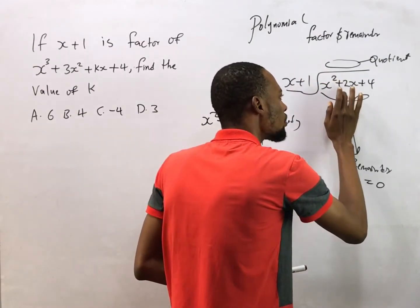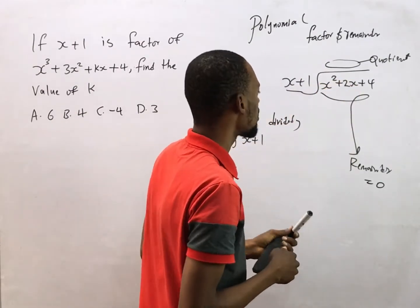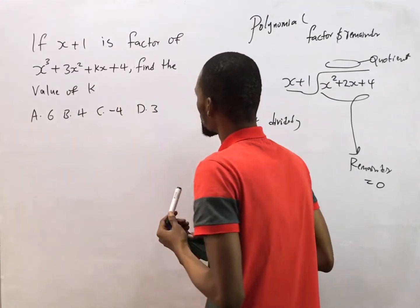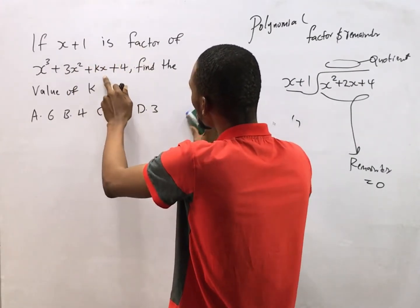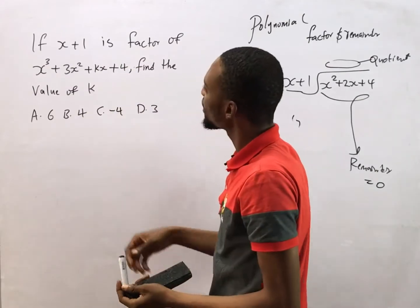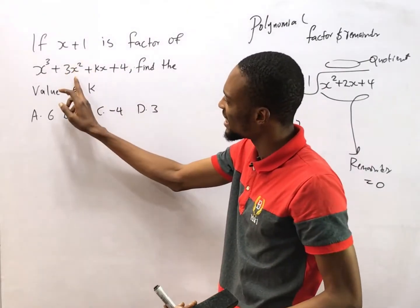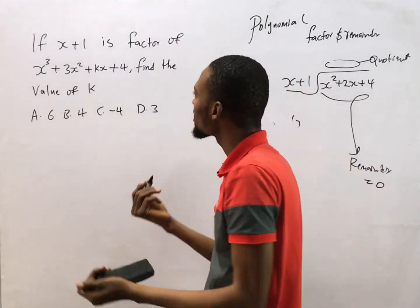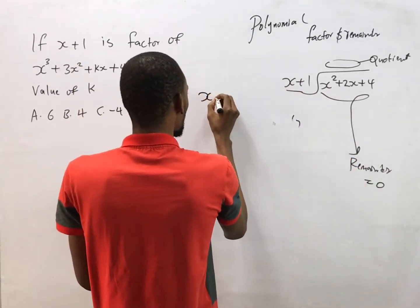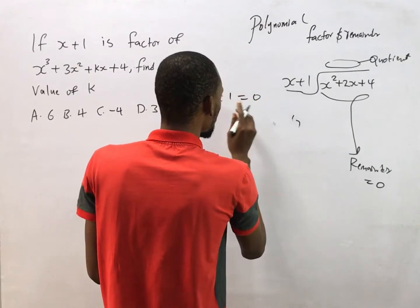Transferring the knowledge to this question, this question says this is a factor of this polynomial. This implies that if we use this guy to divide this, the remainder would be zero. In that case, since x plus 1 is a factor, because x plus 1 equals zero,